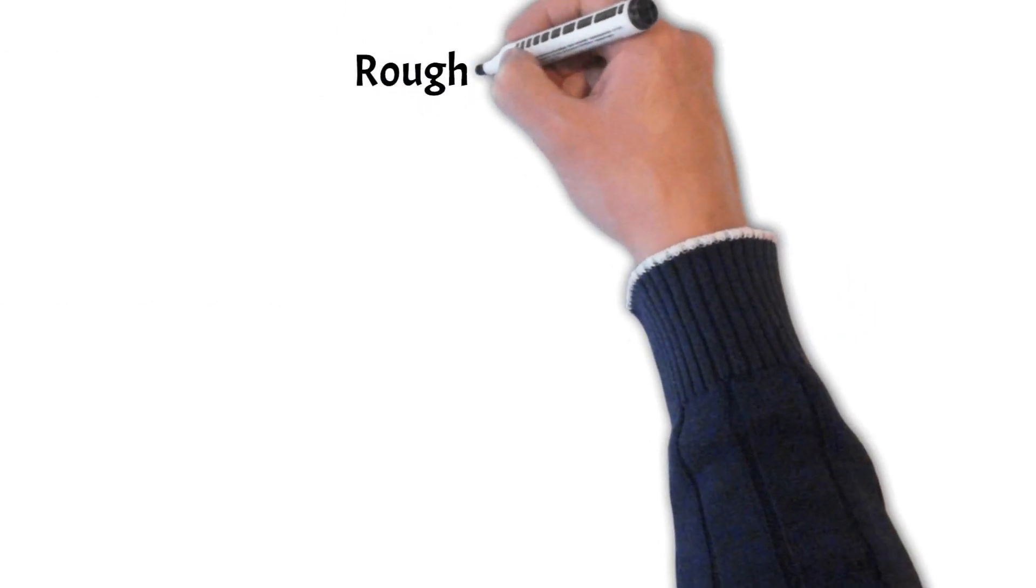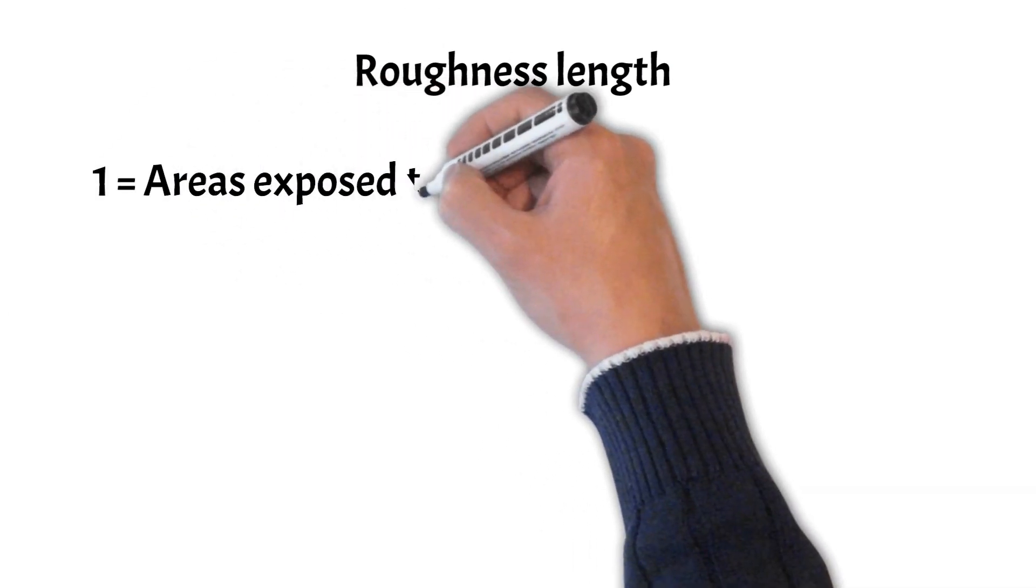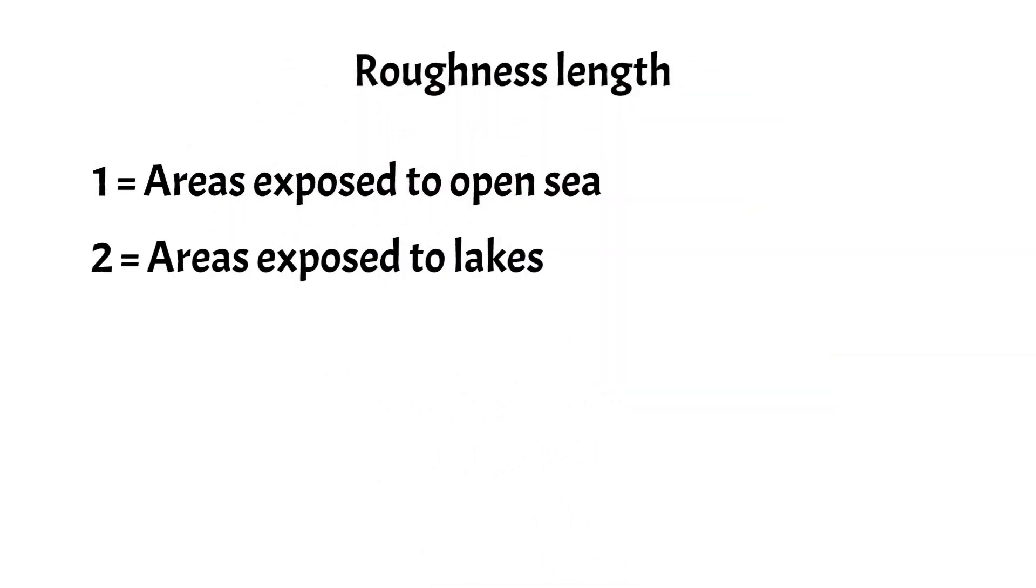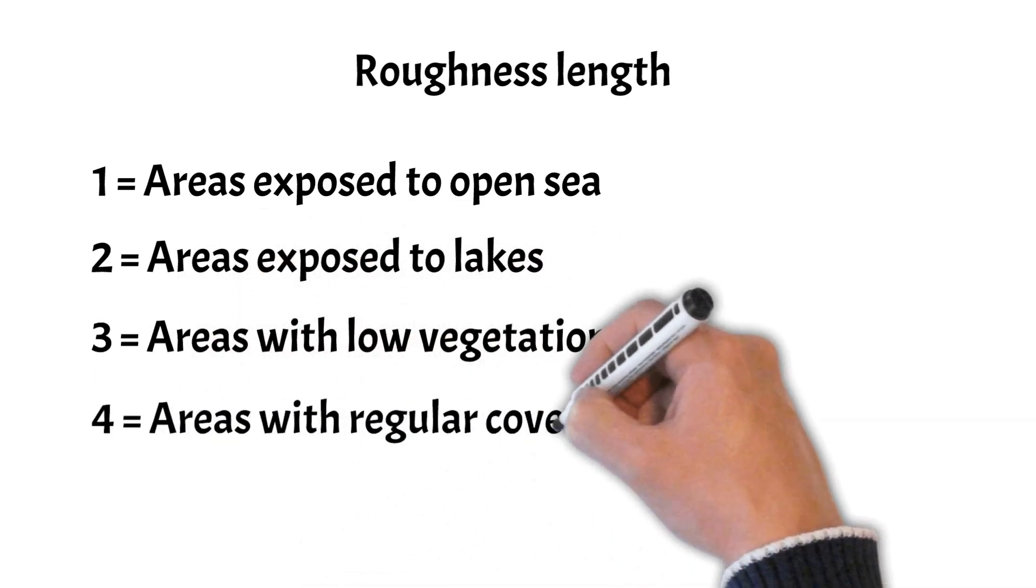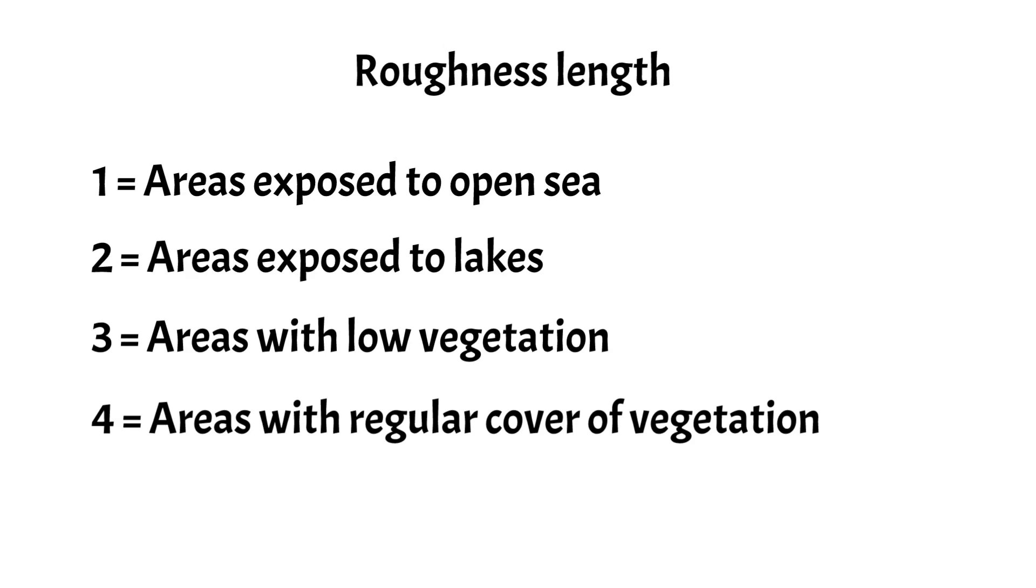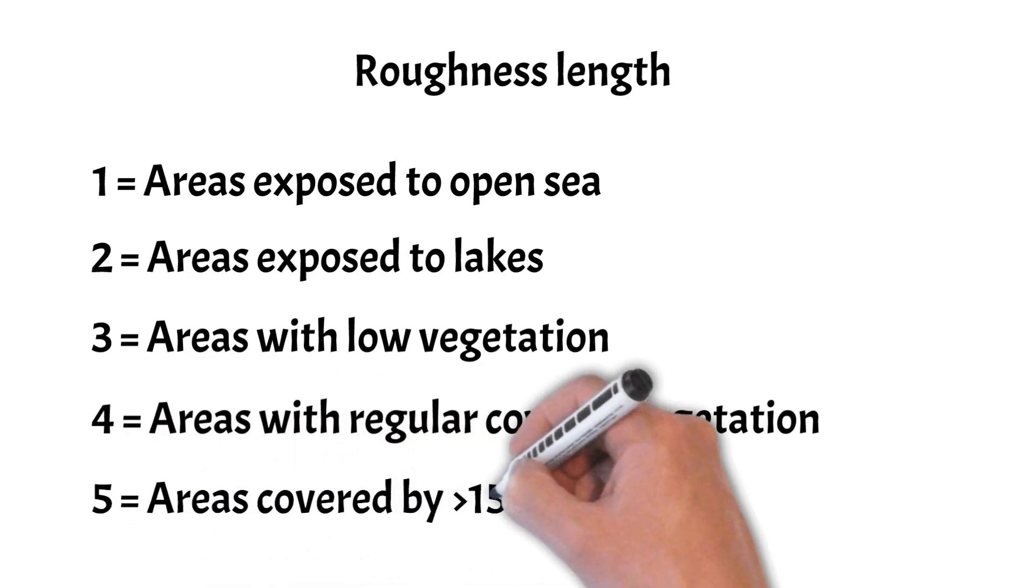Now we define the roughness length. According to Eurocode there are 5 different categories: areas that are exposed to open sea, lakes, areas with low vegetation, areas with regular cover of vegetation or buildings, and areas which are covered by at least 15% buildings.